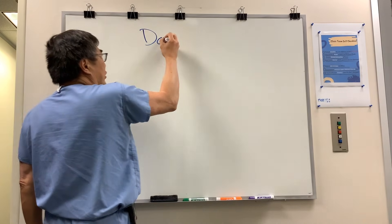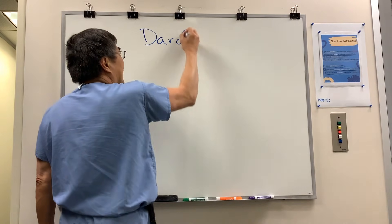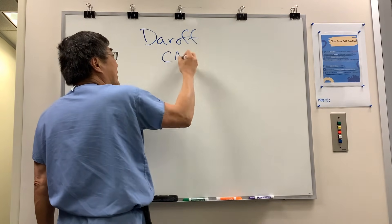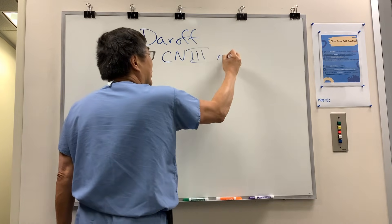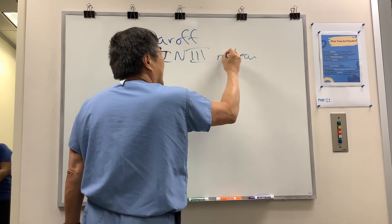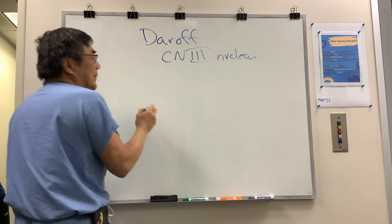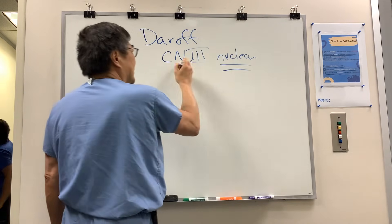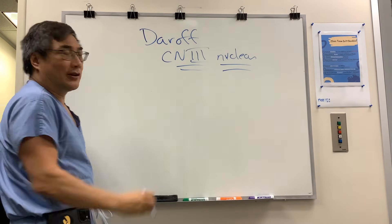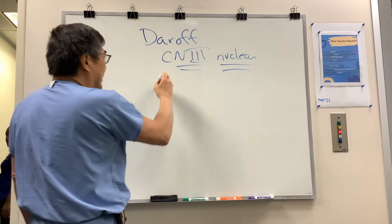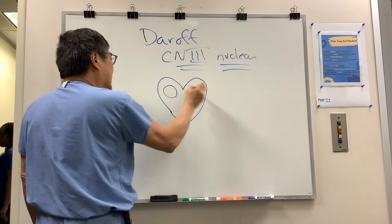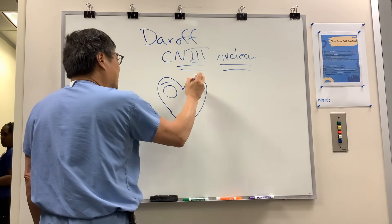Somebody wanted to know about Bob Daroff's rules of cranial nerve 3 nuclear lesions. What that means is the nucleus is different than the third nerve palsy, and the nucleus of three lives in your midbrain.